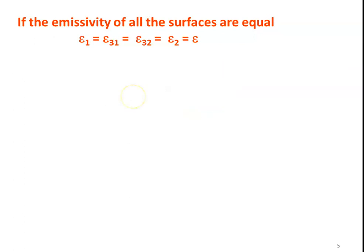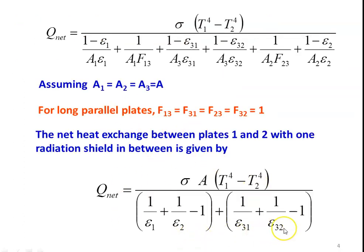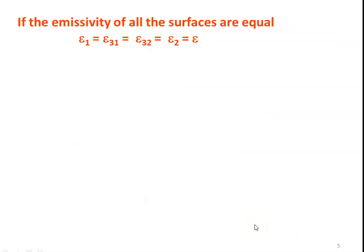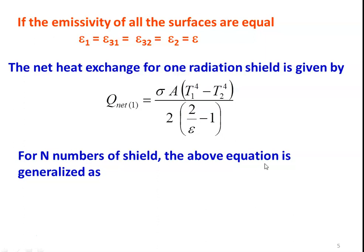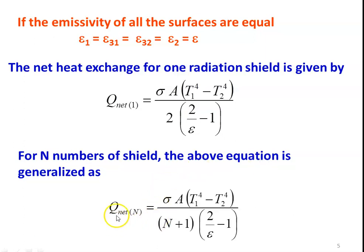In some cases, particularly in nuclear reactor applications, we assume all emissivities are equal. In that case, the equation simplifies to: Q_net = sigma * A * (T1^4 - T2^4) / [2 * (2/epsilon - 1)]. This is for one shield. If we generalize for n shields, the equation becomes: Q_net = sigma * A * (T1^4 - T2^4) / [(n+1) * (2/epsilon - 1)], where n is the number of shields.